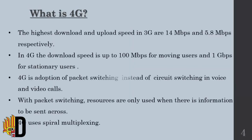The highest download and upload speeds in 3G are 14 Mbps and 5.8 Mbps. In 4G, download speed is up to 100 Mbps for moving users and 1 Gbps for stationary users. 4G is an adoption of packet switching in voice and video calls, and 4G uses OFDM multiplexing.